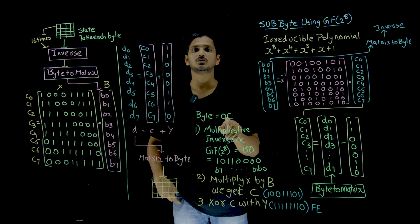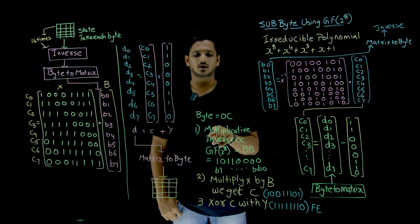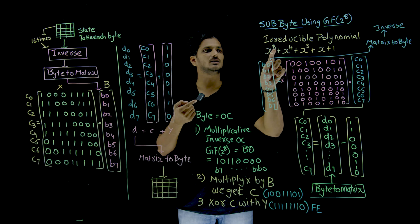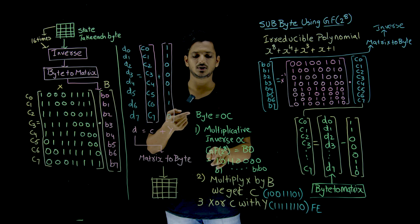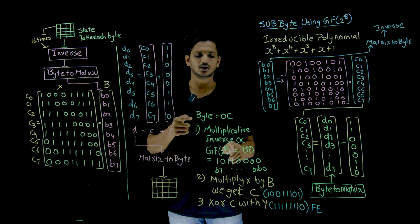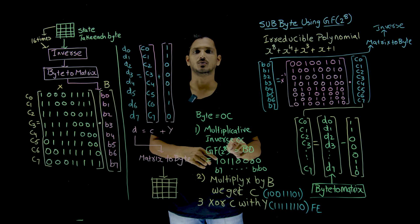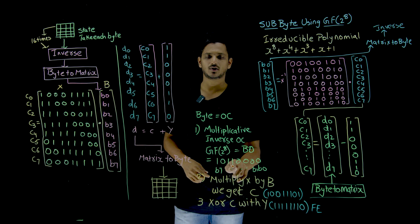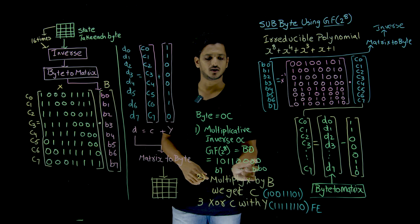Let us take a byte as 0C in hexadecimal format. First we need to identify the multiplicative inverse of 0C using X^8 — this irreducible polynomial. First, multiplicative inverse of 0C using GF of 2 power 8. After converting 0C, the multiplicative inverse you are going to get is B0. B means 11 in decimal — 1 0 1 1 means 11, and 0 0 0 0 means 0. So this is the byte we are going to get: B0, B1, B2, so on up to B7.